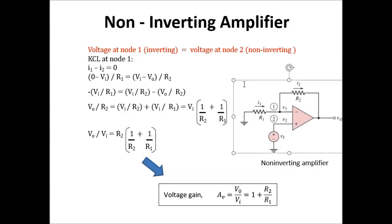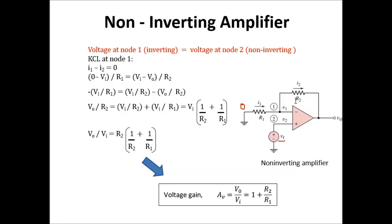Back to the KCL equation. This node is zero volts, so the branch current equation gives us: zero minus vi over R1 for current I1. Similarly, I2 is vi minus vout over R2.